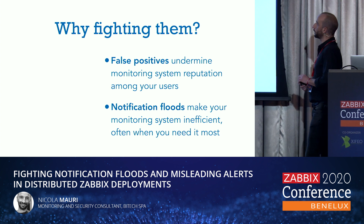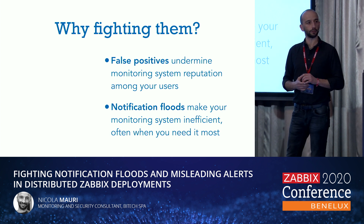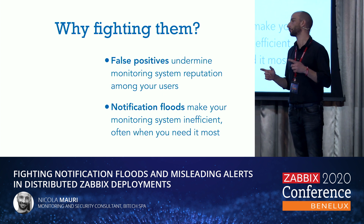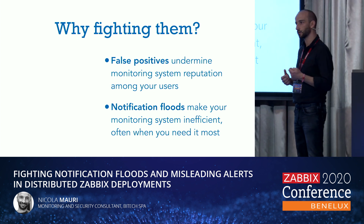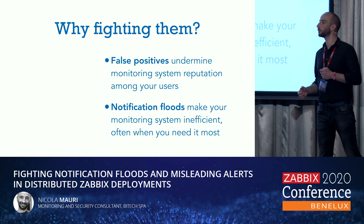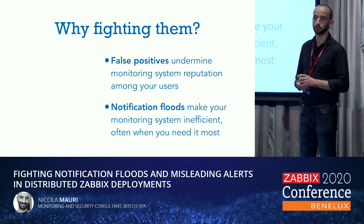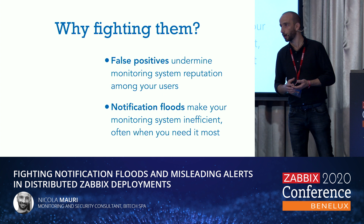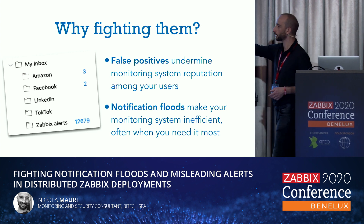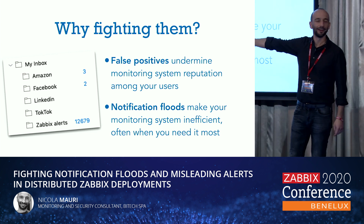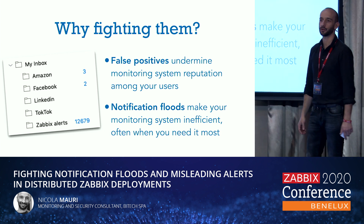In our experience, if false positives are more than 5 or 10% of total notifications, your users will stop trusting information coming from the Zabbix system. And if you flood them with hundreds of emails, Telegrams, and notifications, they will probably not be able to understand what's happening and what to do. Most likely, they will create those infamous Outlook rules to get rid of your messages — and game over. They will not use your Zabbix service anymore.